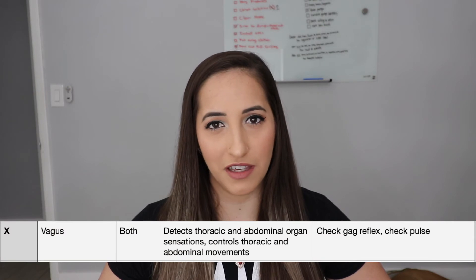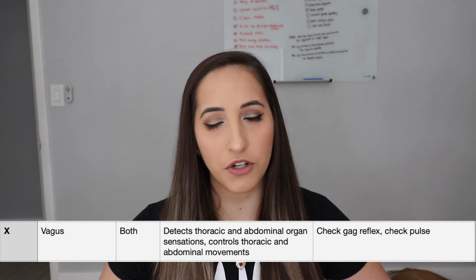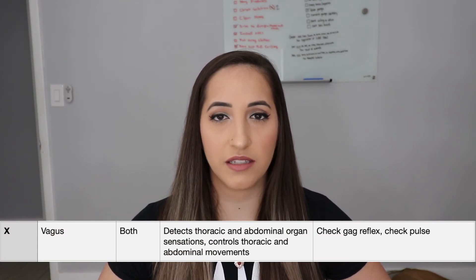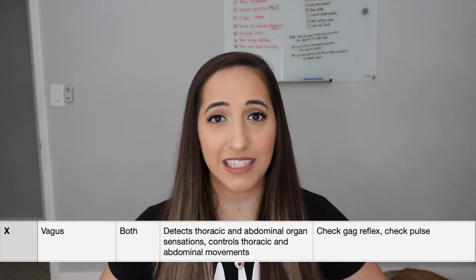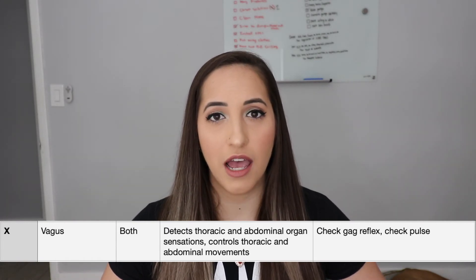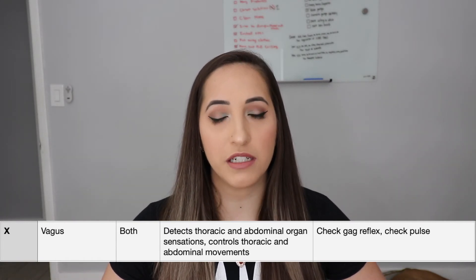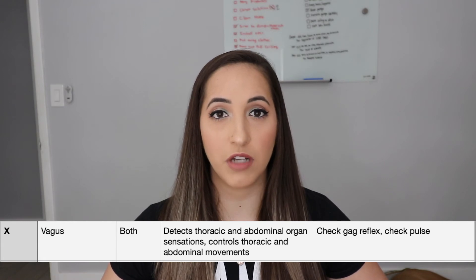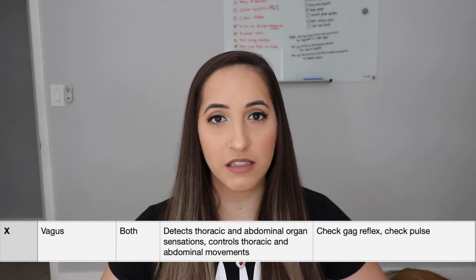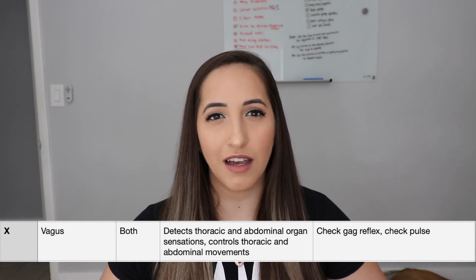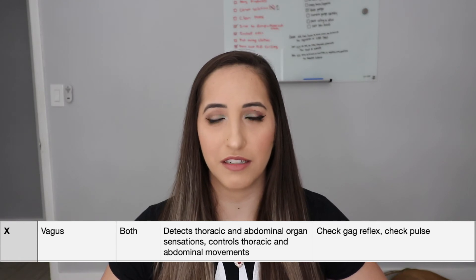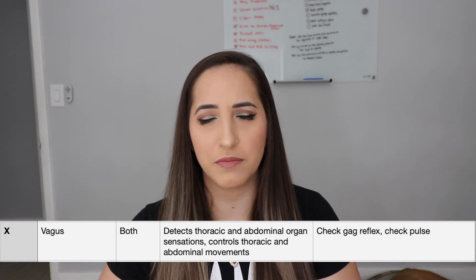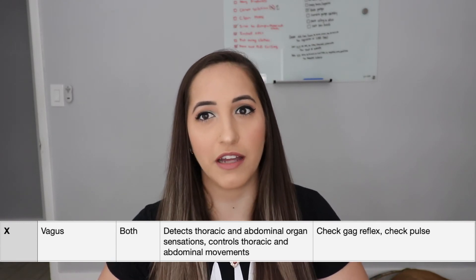The tenth cranial nerve is the vagus nerve. It's both sensory and motor — sensory because it detects thoracic and abdominal organ sensation, and motor because it controls thoracic and abdominal movements. For this, you can check a gag reflex, but more so just check a patient's pulse while they're bearing down.